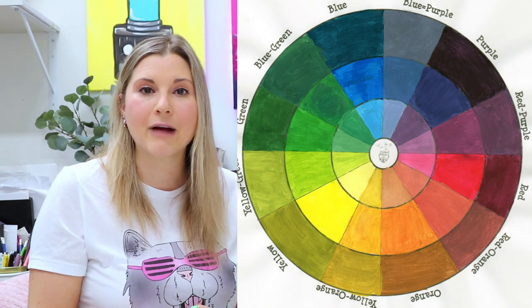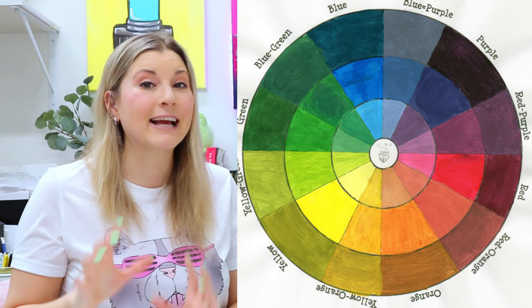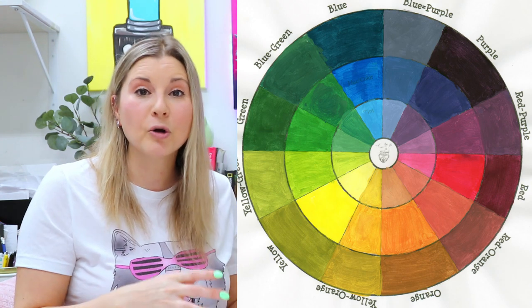Primary colors are red, blue, and yellow. Secondary colors are purple, green, and orange. Now, here's where it gets really exciting.